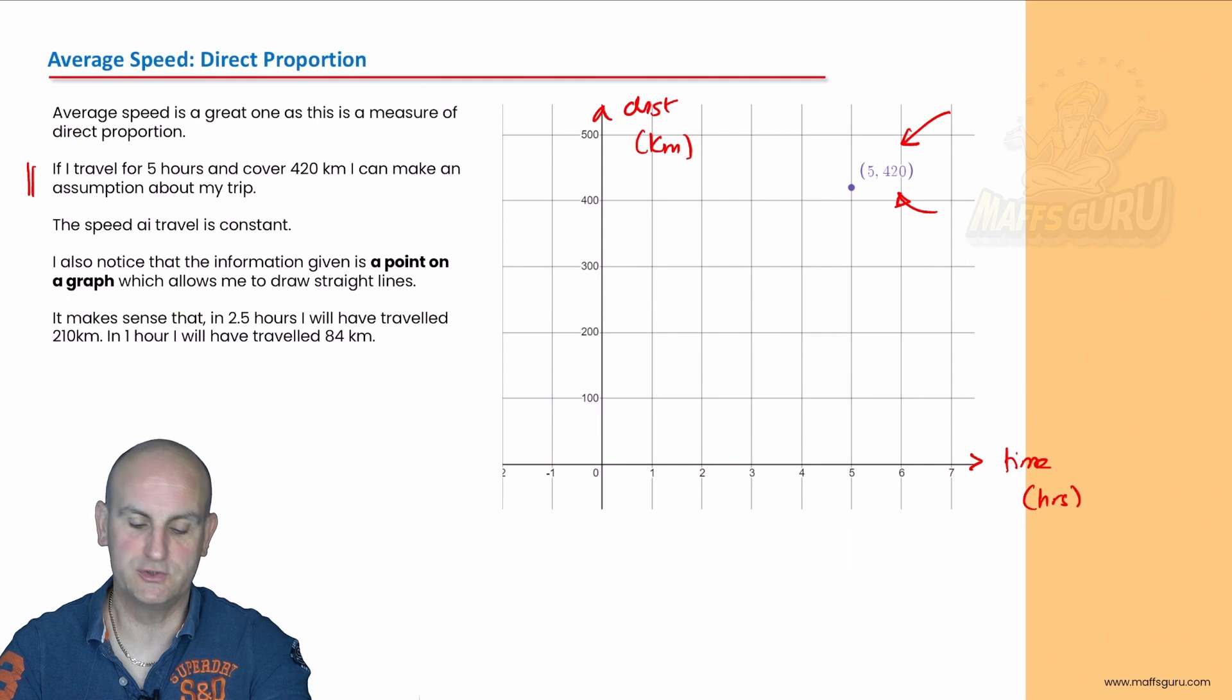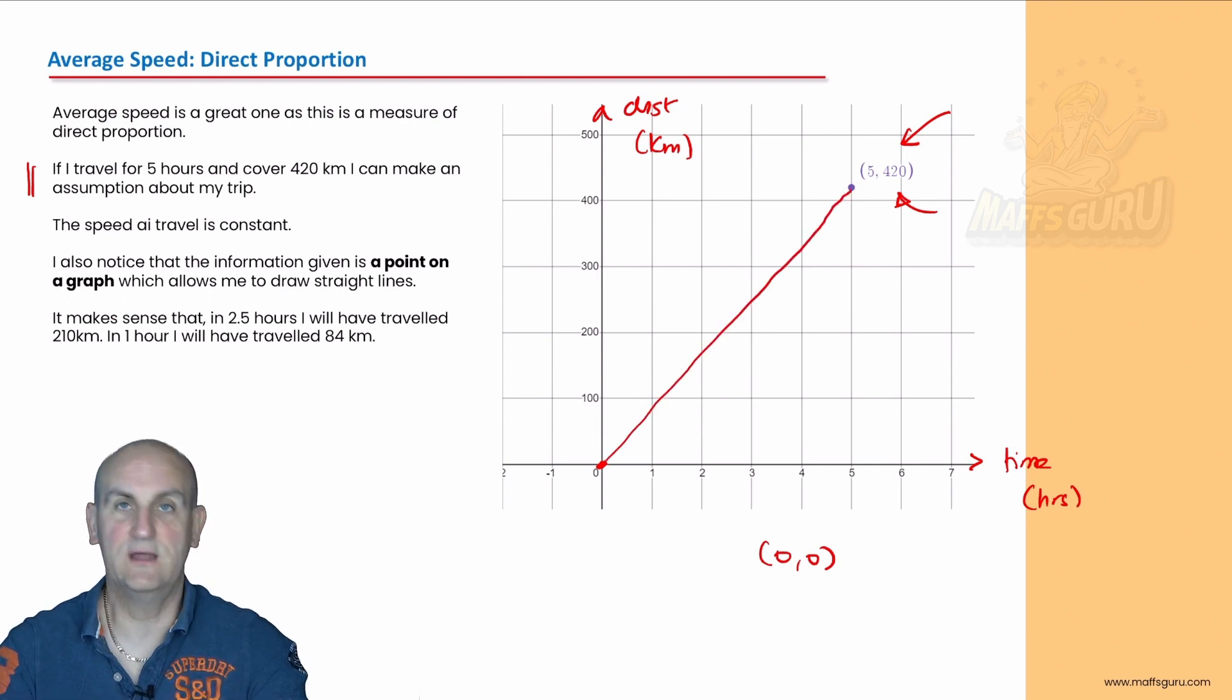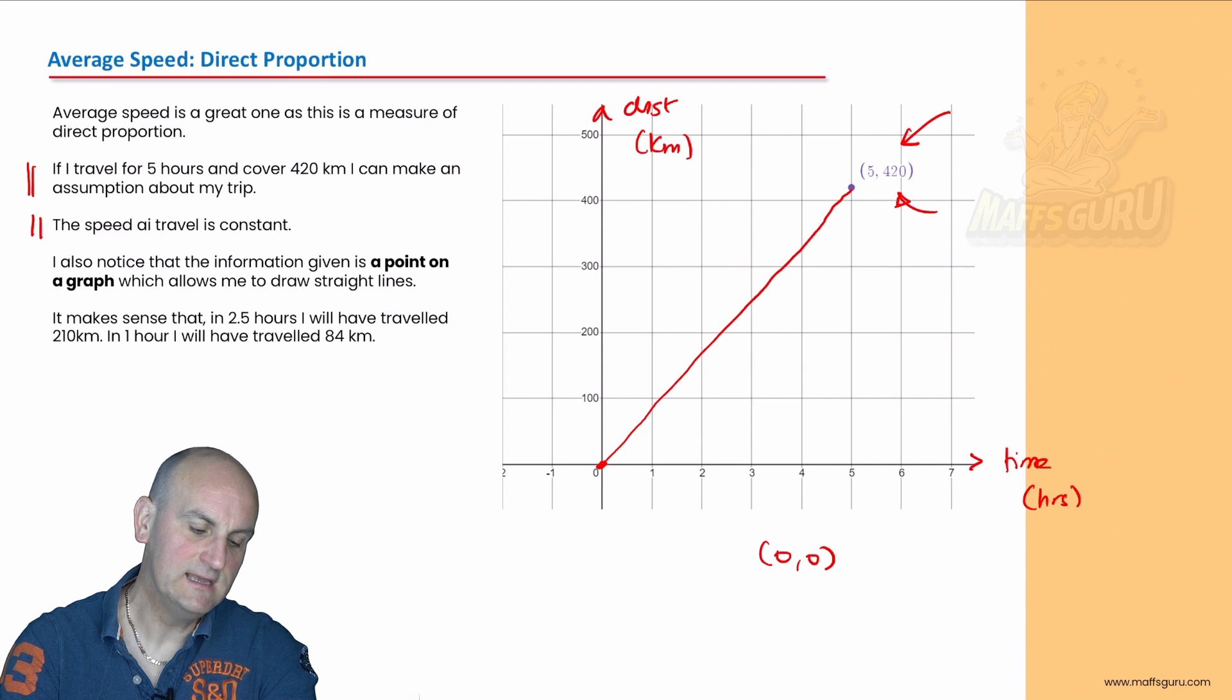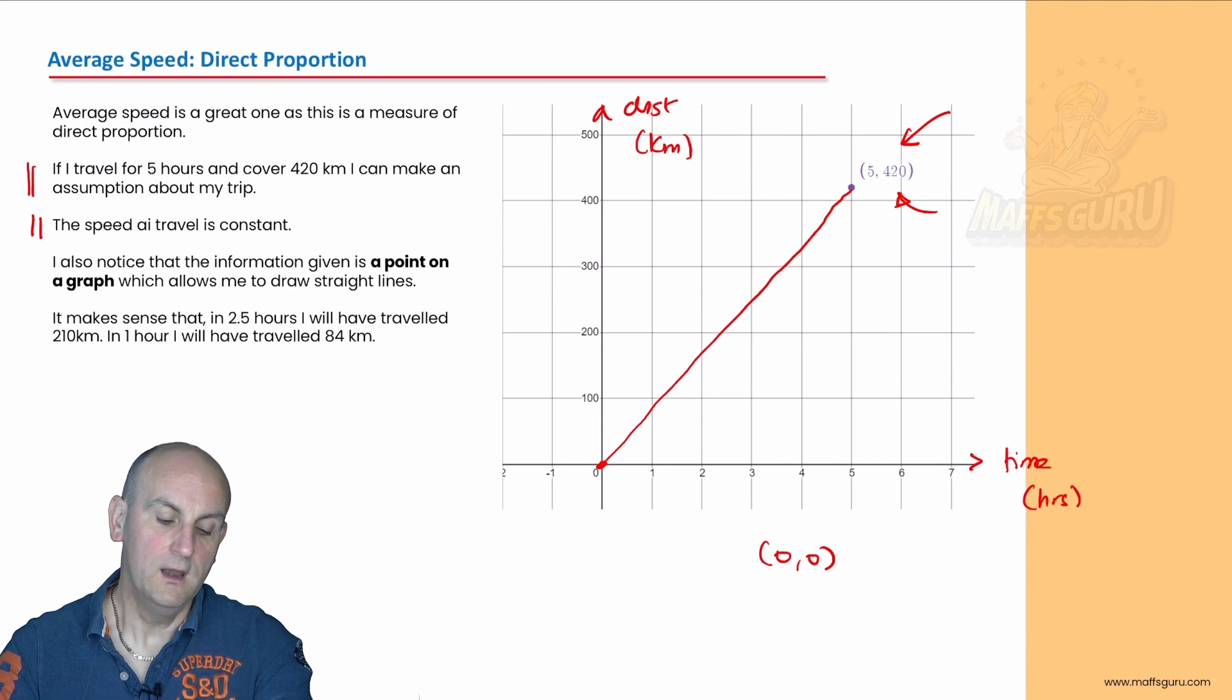Now, because it's directly proportional, I know that this point here, zero zero, also exists. Because when I left, I hadn't covered any distance. So at zero time, I'd covered zero distance, which means I can now actually join those two points together. And because that's a straight line, it is directly proportional. This stuff is awesome, right? Now, what it's suggesting there is the speed I travel at is constant. That's not true. Again, I'm not hooning around a car park, I'm not jumping every red light, I'm not scattering pedestrians everywhere. Don't do that. Bad idea.